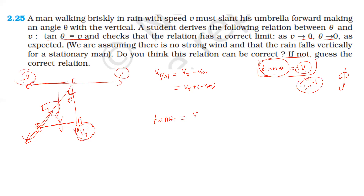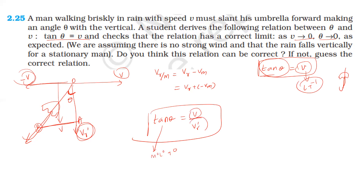The opposite side by adjacent side gives velocity of rain divided by velocity of man. The left side, tan theta, is dimensionless: M power 0, L power 0, T power 0. The right side is velocity divided by velocity — the velocity dimensions cancel — so the dimension is correct. The correct equation is tan theta equals velocity of man divided by velocity of rain.